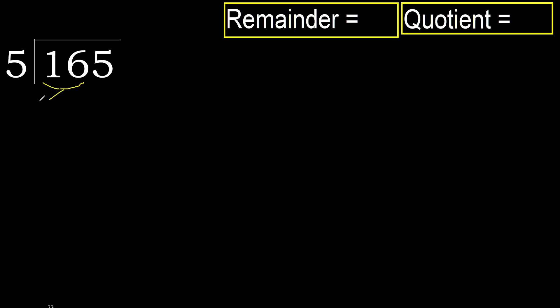16 is not less than 5, therefore we work with 16. Multiply 5 by which number is nearest to 16 but not greater. 5 multiply by 4 is 20 — 20 is greater. Multiply by 3 is 15 — 15 is not greater. 16 minus 15 is 1.